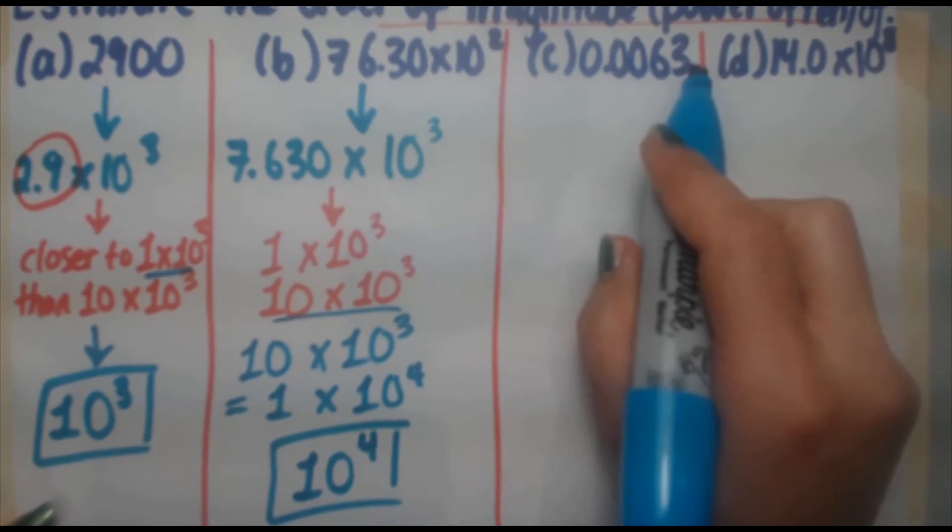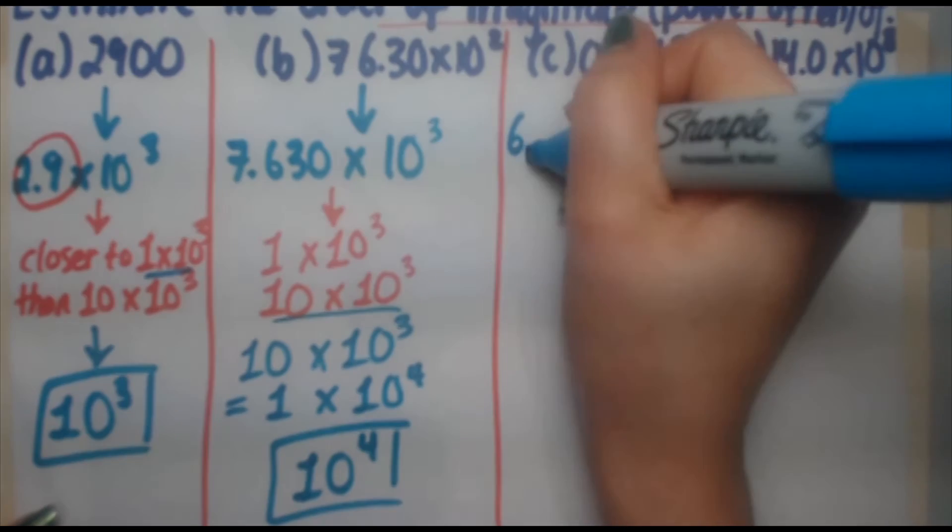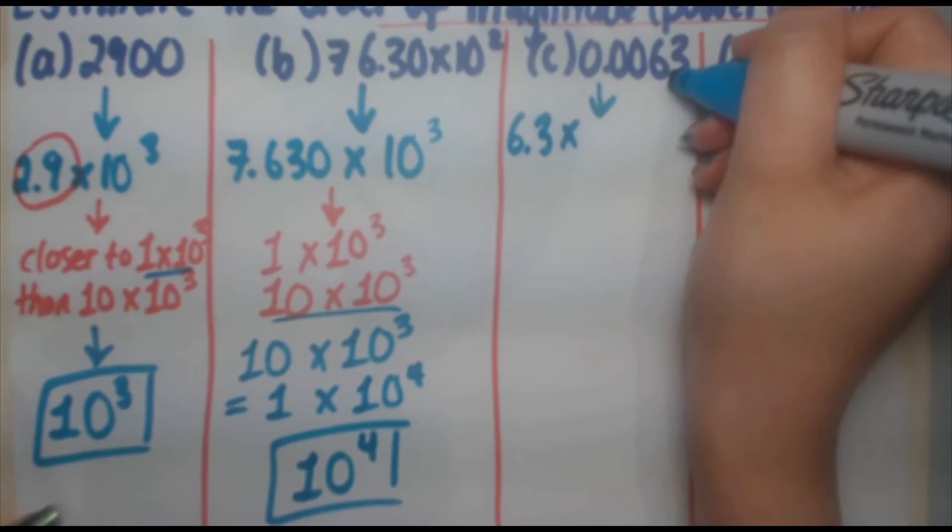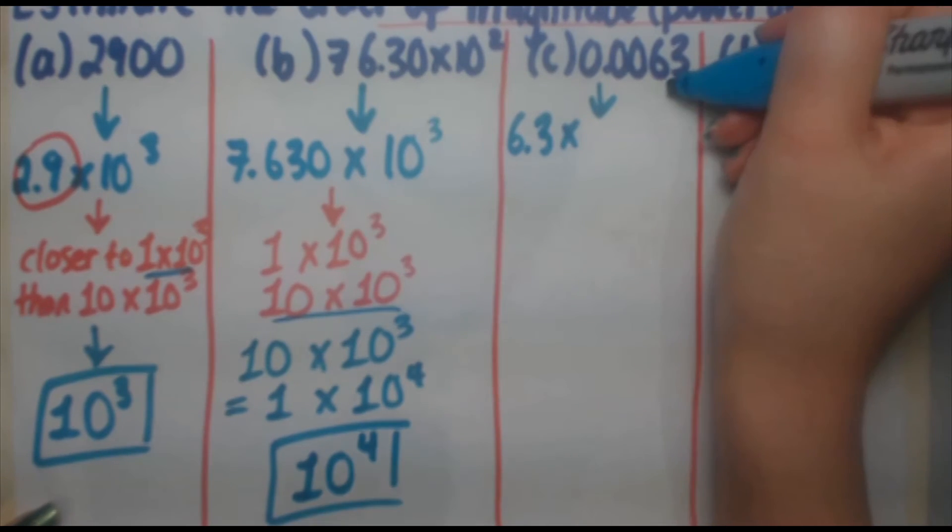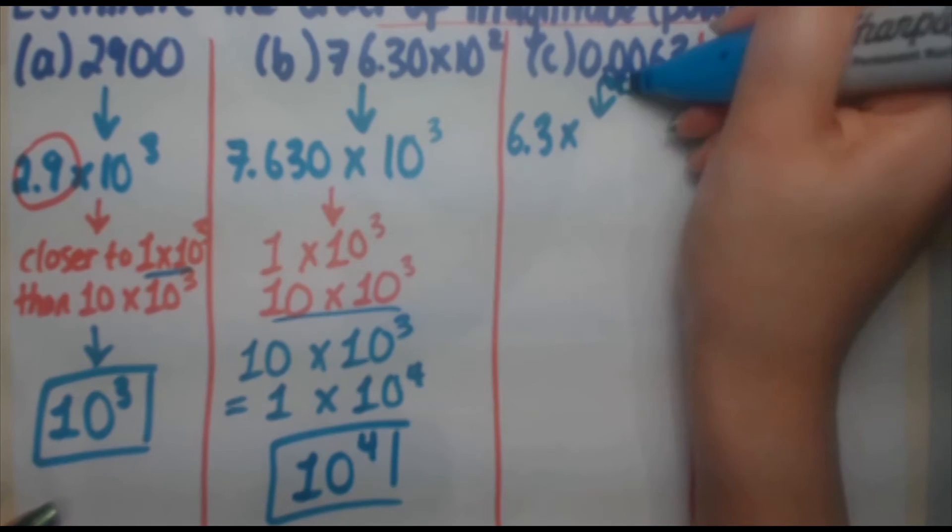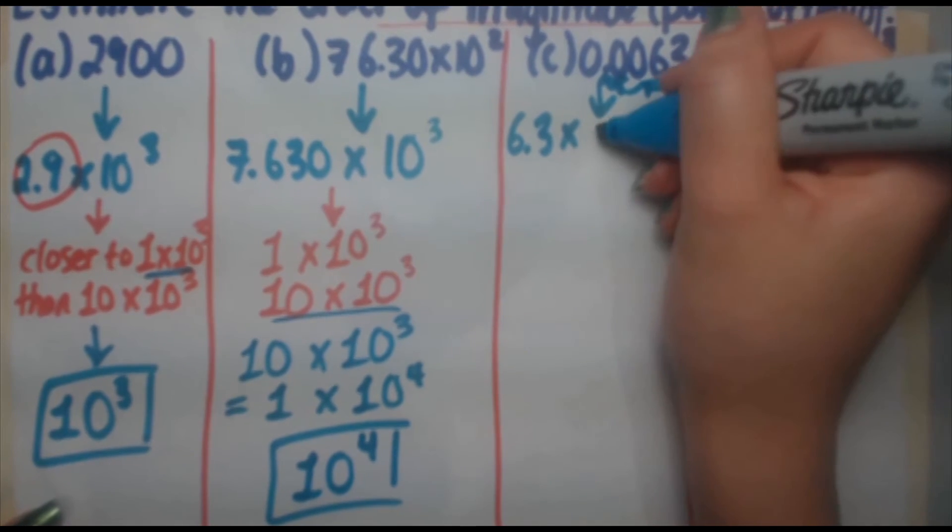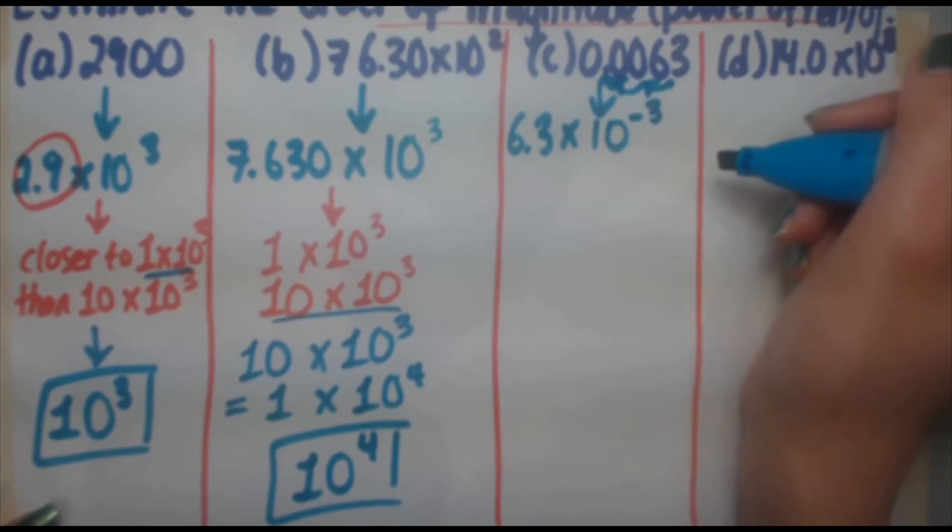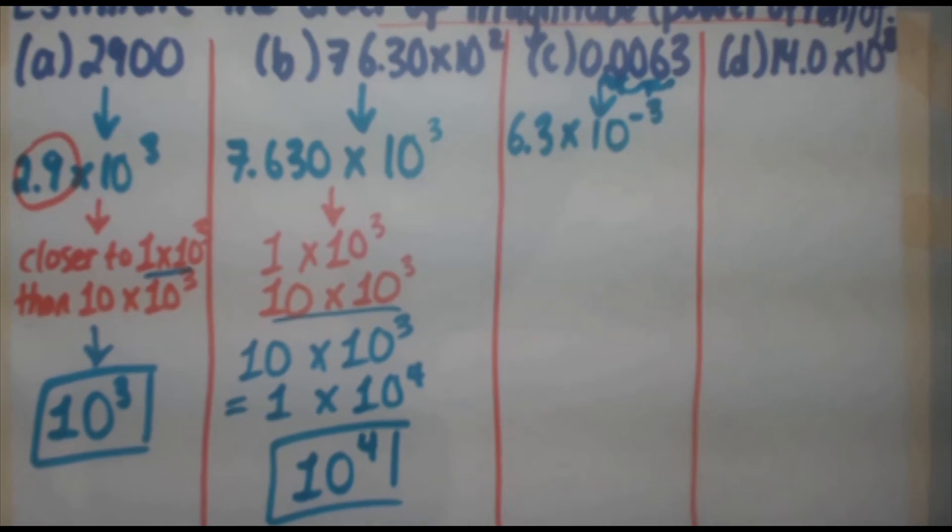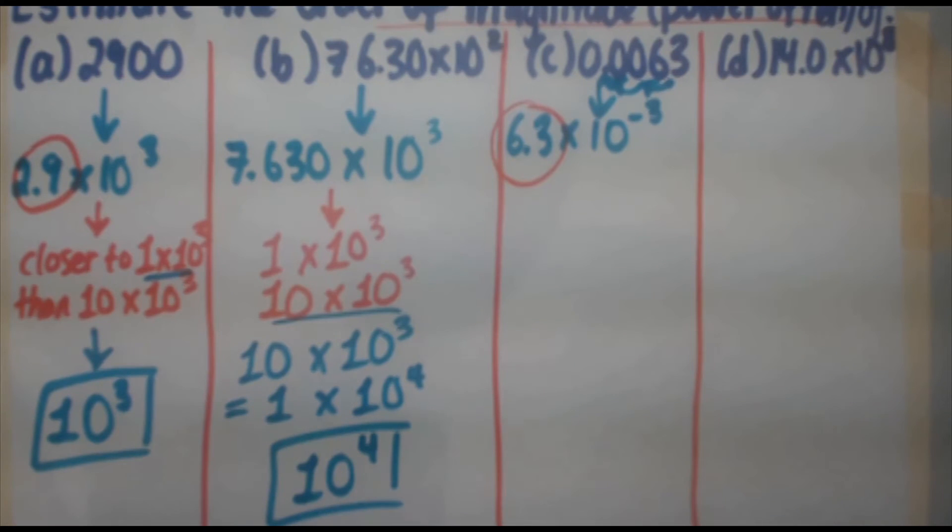So moving on to part C, we've got 0.0063. Let's write that in scientific notation first. 6.3. If you put up a decimal there, you have to move it 1, 2, 3 times to get to where it is. And you're going in the left direction, therefore making it 6.3 times 10 to the minus 3. So we're dealing with the order of minus 3. So again, you're taking a look at that number in the front. So let's look at the two boundaries.